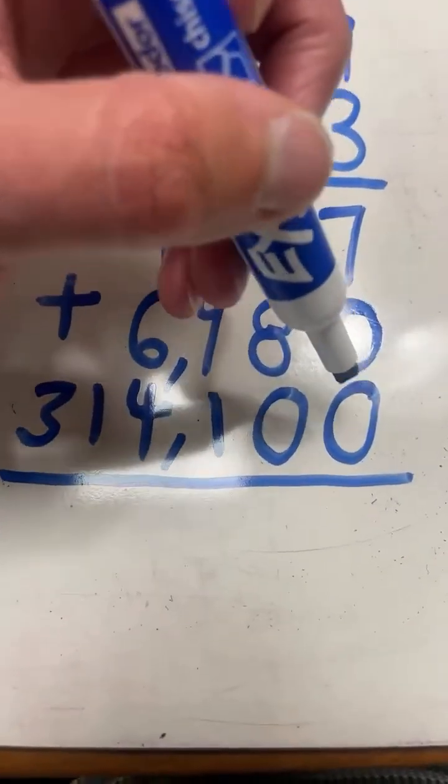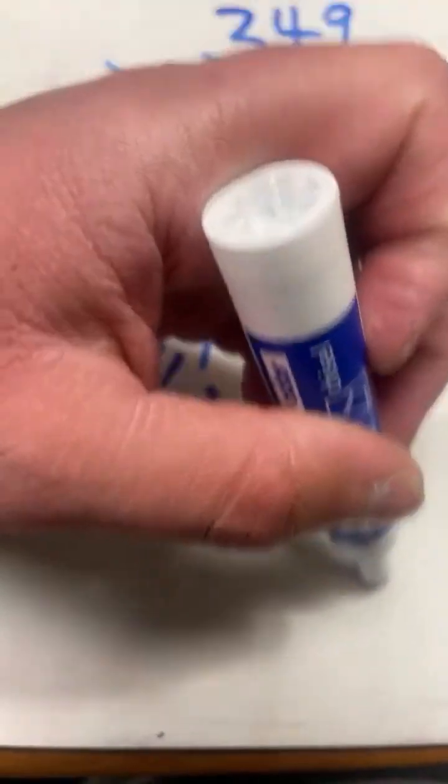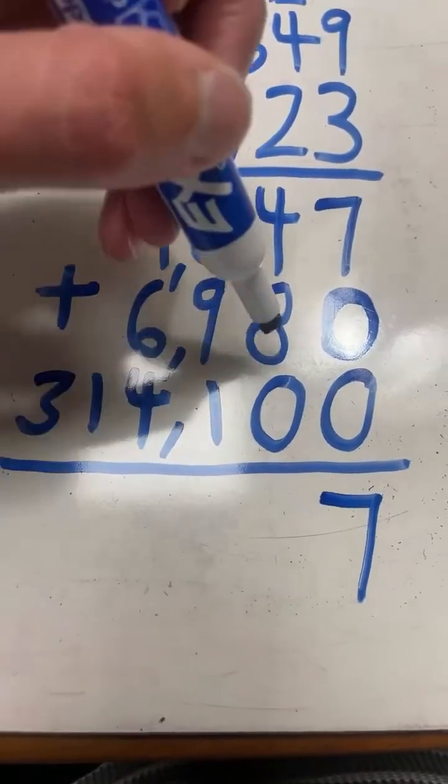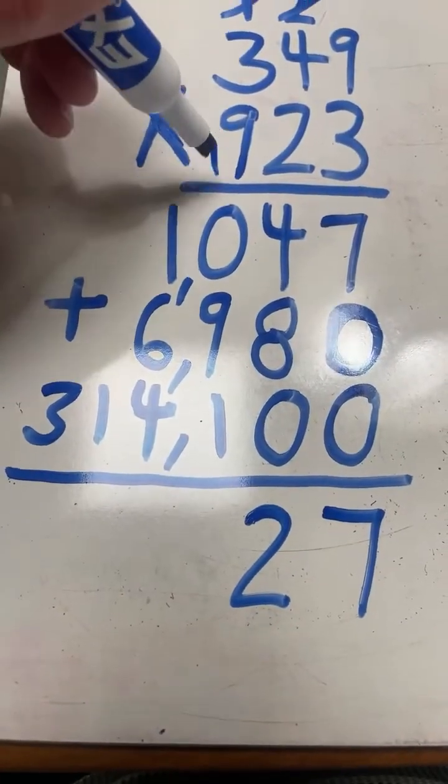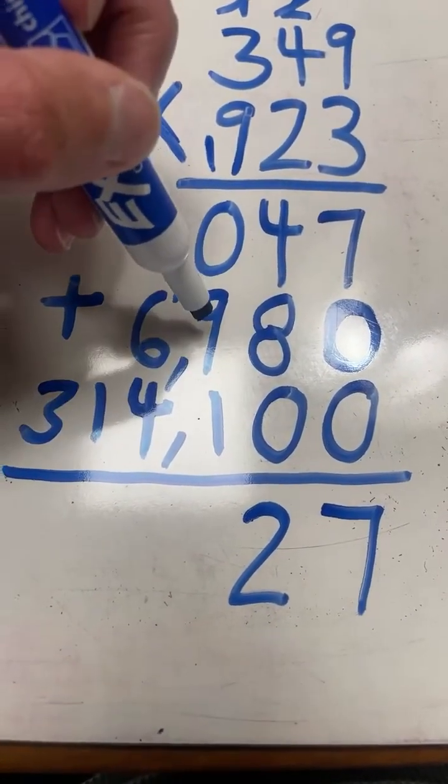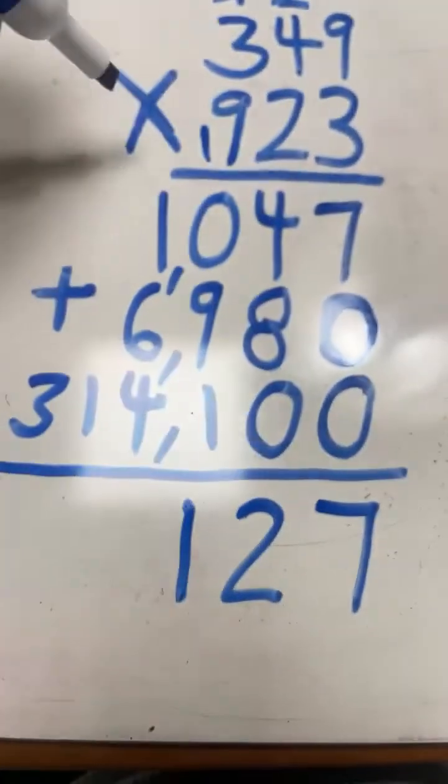7 plus 0 plus 0 equals 7. 4 plus 8 plus 0 equals 12. 2, carry the 1. 1 plus 0, that's 1, plus 9 is 10, plus 1 is 11. 1, carry the 1.